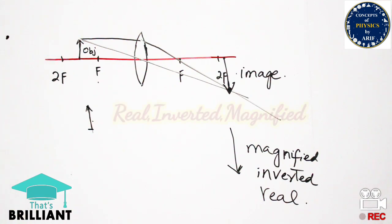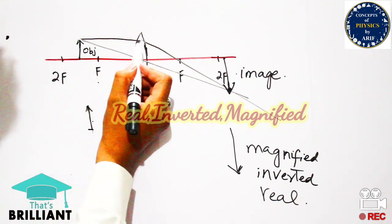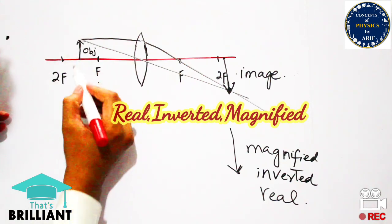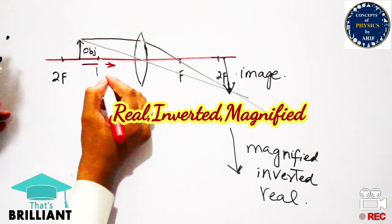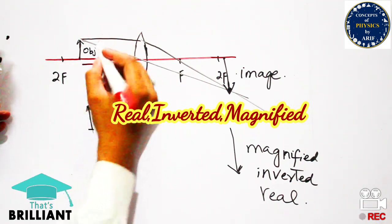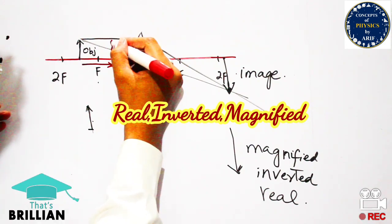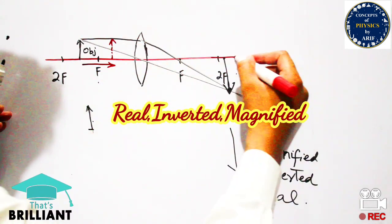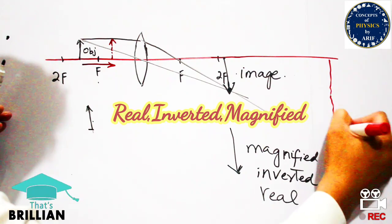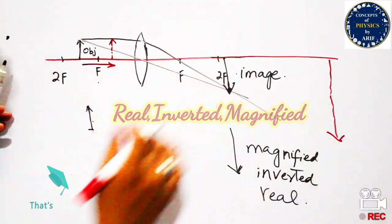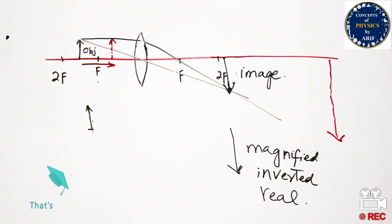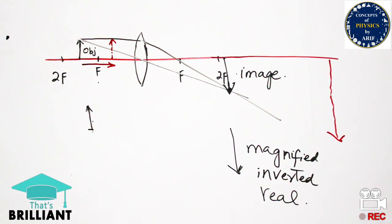The properties of the convex lens hold: the image is magnified, inverted, and real, and it is formed away from 2f. Another property of the convex lens is that as the object is moved toward the lens, the image will also be produced away from 2f and the magnified image can also be seen. The property holds: magnified, inverted, and real image is produced.